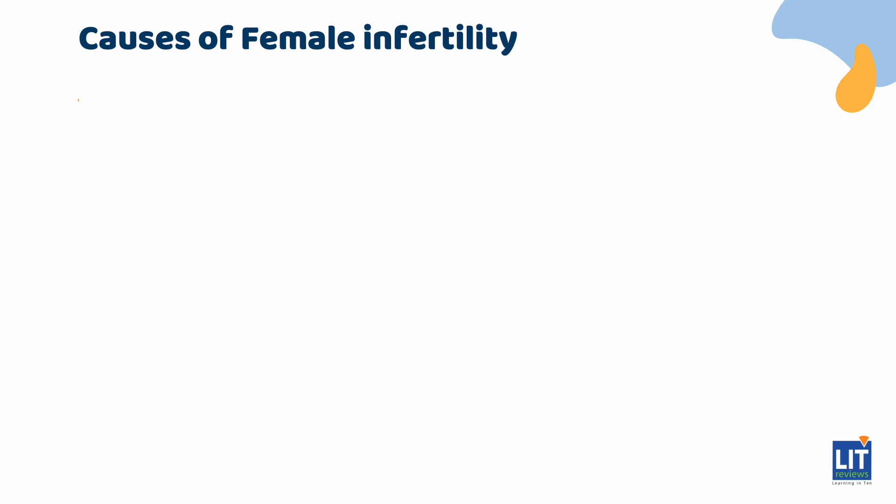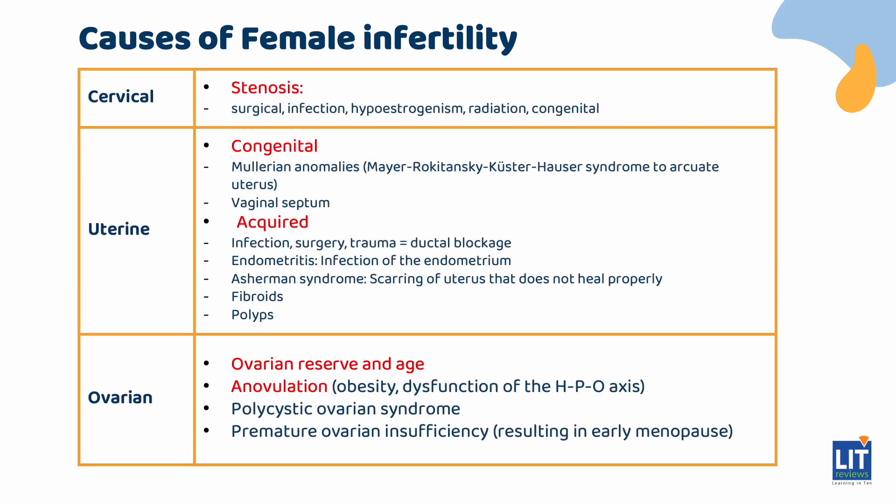Female causes are a little easier to visualize. There are called factors, described as you move up the genital tract. First, there is cervical factor, usually a result of stenosis that prevents sperm from reaching the egg in the fallopian tube. Stenosis can be a consequence of surgery, infection, hypoestrogenism, radiation, or even congenital causes.